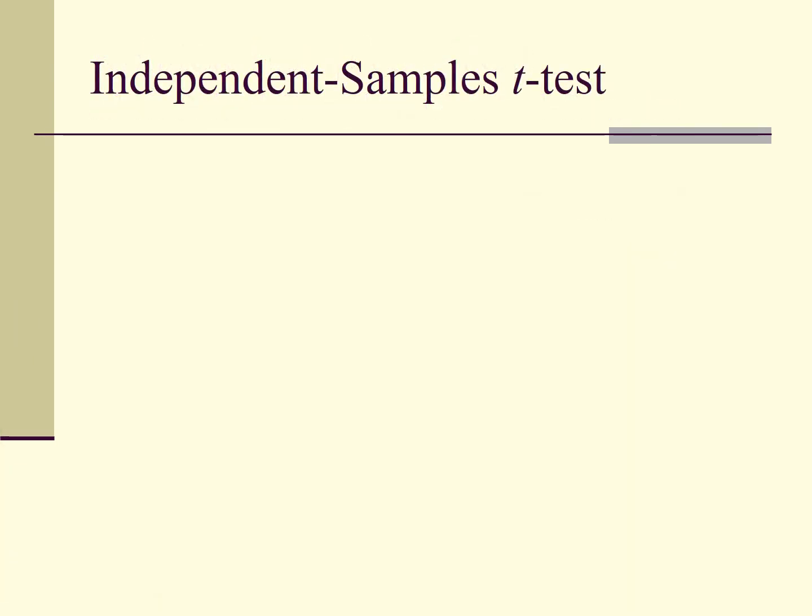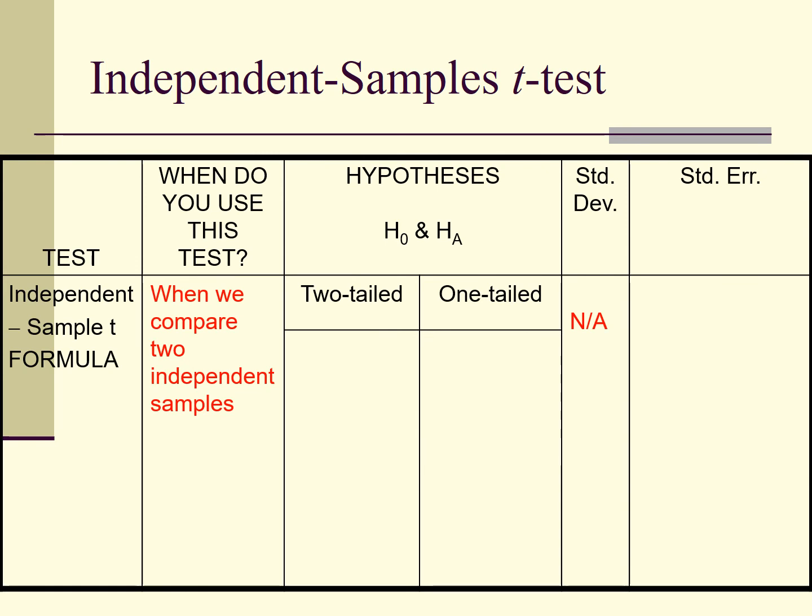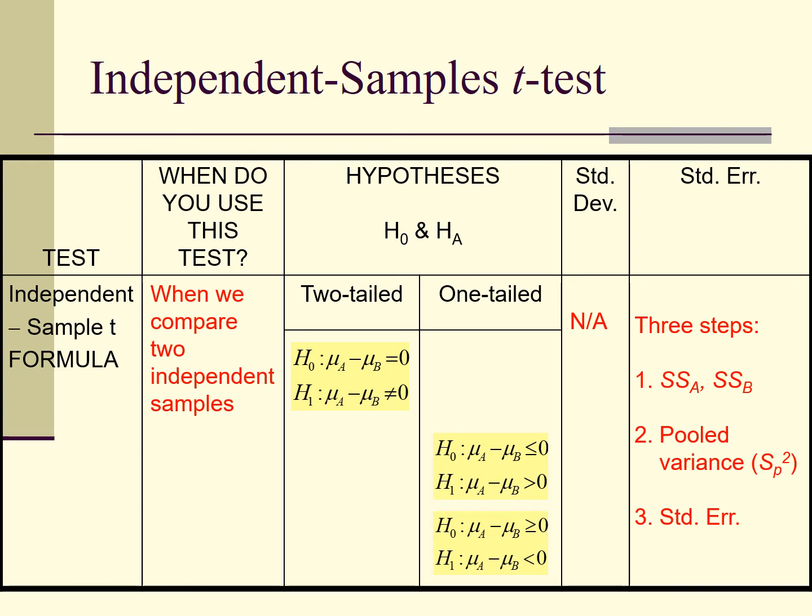This is the page for independent samples t-test. When to use the test, then how to form hypothesis for a two-tailed test, how to form hypothesis for one-tailed test, how to compute the standard error following three steps, how to compute the t-observe score.